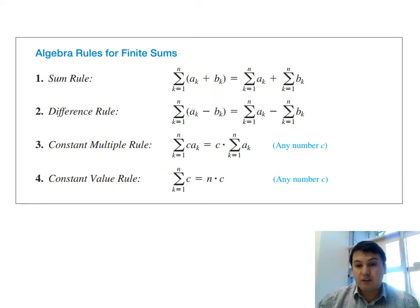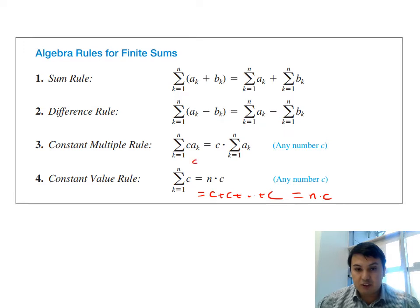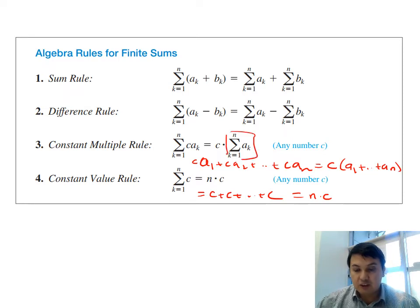The algebraic rules for sigma notation: the sum of (a_k + b_k) equals the sum of a_k plus the sum of b_k; similarly for differences. Multiplying each term by a constant c means you can factor out c and multiply it by the total sum. If you sum a constant c from 1 to n, there are n terms, so the result is n times c.